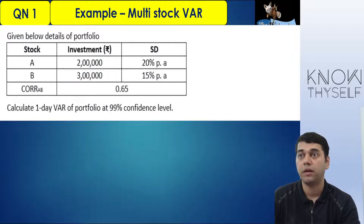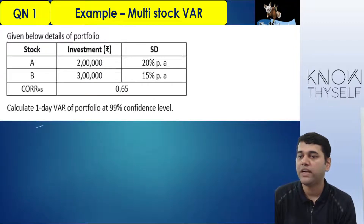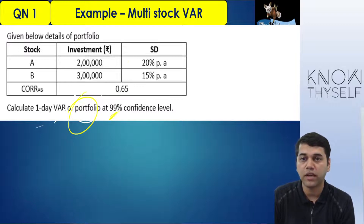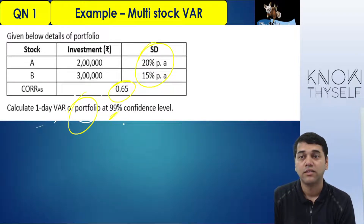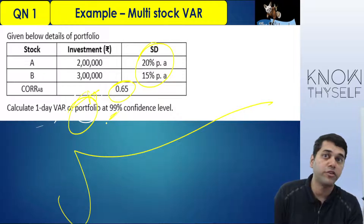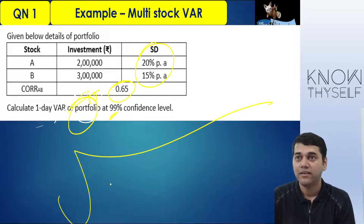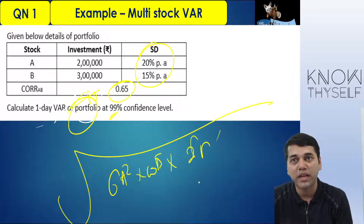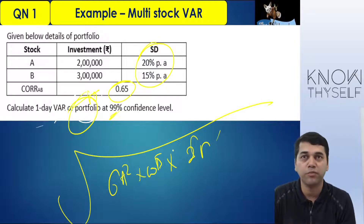Now let us understand a multi-stock portfolio. I have got stock A and stock B. The correlation between them is 0.65. Calculate 1-day VAR of the portfolio — not of individual stocks — at 99% confidence. Standard deviation of the portfolio is not given directly; individual stock standard deviations are given along with the correlation. I can calculate the weight. Since correlation is 0.65, not perfect positive or negative, I must use the full portfolio standard deviation formula.